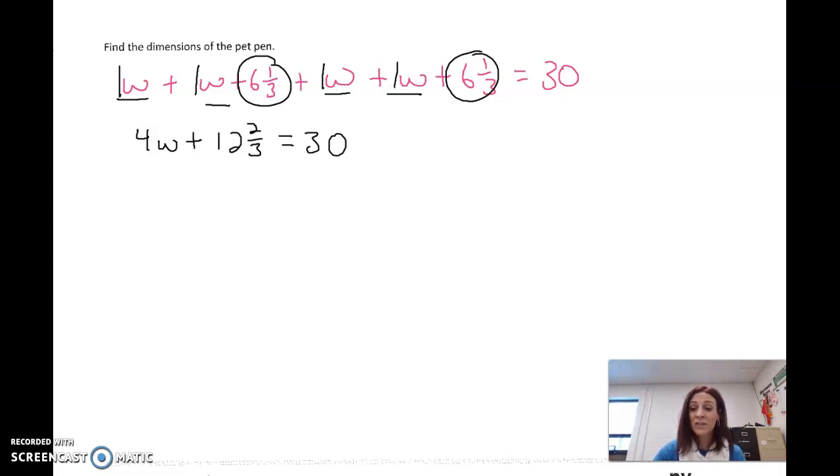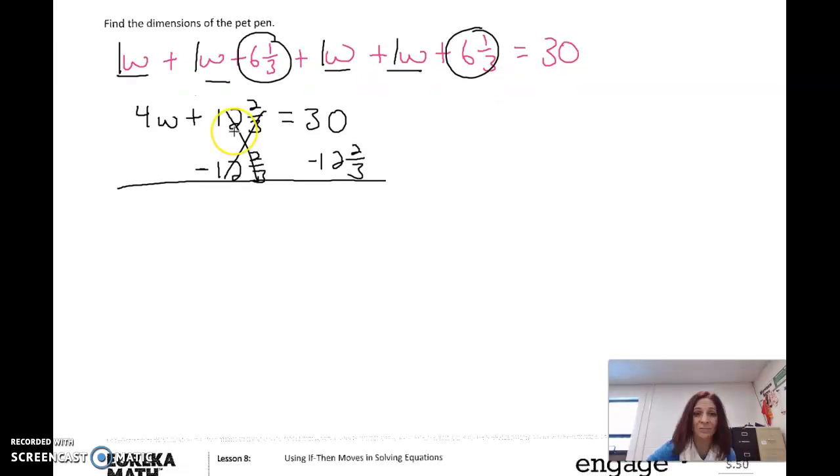Remember, these W's really have ones in front of them, they're one W's. So I have one, two, three, four W's, plus six and a third, plus six and a third. You can always do the math off to the side if you want. That equals 30. Alright, so now let's solve this equation using our if-then moves. This equals this, if that's true, which it is, then I am going to get rid of whatever's being added or subtracted to it first. So I'm solving for this W, get rid of this part first. Since it's plus 12 and two thirds, I'm going to minus 12 and two thirds.